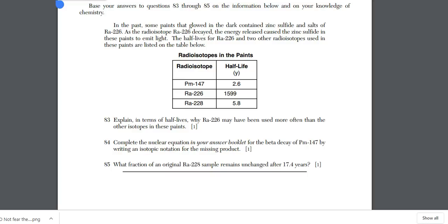Part C, questions 83 through 85, we have some nuclear chem questions. We have a paragraph of information and a data table. Question 83: explain in terms of half-lives why radium-226 may have been used more often than the other isotopes in these paints. Going back, it's talking about paints that glowed in the dark containing zinc sulfide and salts of radium-226. As radium-226 decayed, the energy released caused zinc sulfide to emit light. The half-life of radium-226 is much greater than the other radioisotopes. That's your answer.